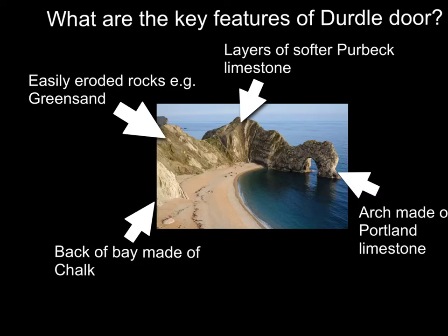Behind the Portland Limestone we can see a number of weaker rocks. First we have the Purbeck Limestone, which is actually made of limestones and mudstones. While relatively hard, it erodes quite quickly in comparison to the Portland. The softest rocks in this area are behind that — these are the greensands and clays and various other weak, easily eroded rocks that form this slumped area. The final and youngest rock is at the back of the bay, forming chalk, which creates quite large, substantial headlands and cliffs further along this stretch of coastline.